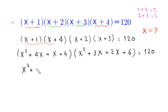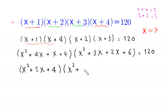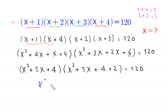We notice that x²+5x+4 and x²+5x+6 differ only by 2. We can write x²+5x+6 as (x²+5x+4)+2. Now we let t = x²+5x+4, so the equation becomes t(t+2) = 120.